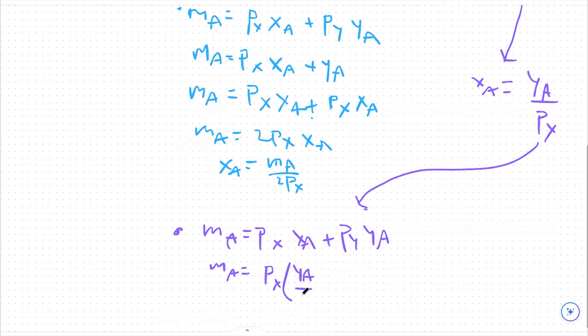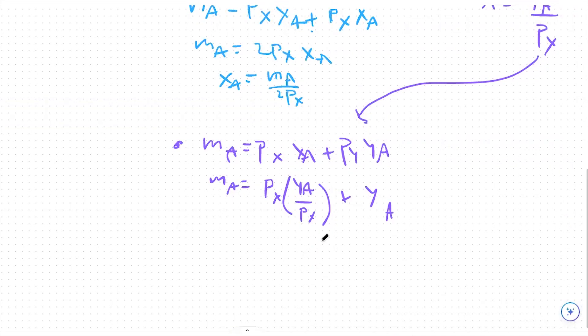I'm going to say yA over px instead of xA there. Then I'm going to still add my yA. And I'm going to note as well that this py should just be 1. So it will go away.